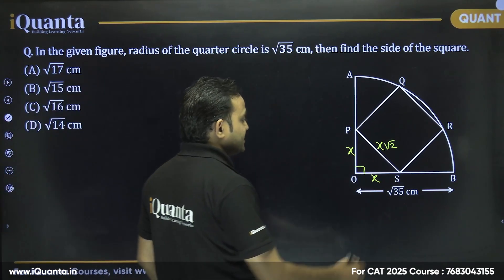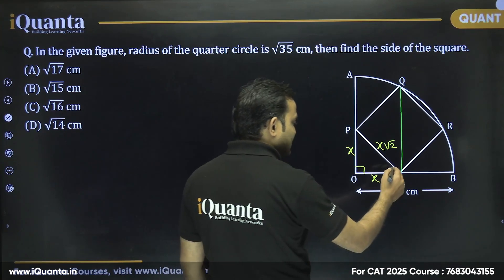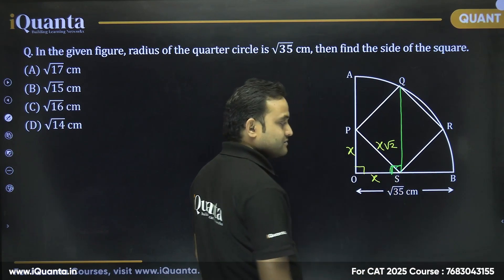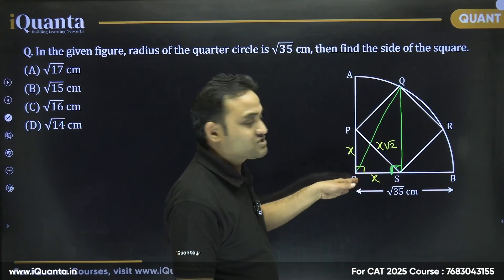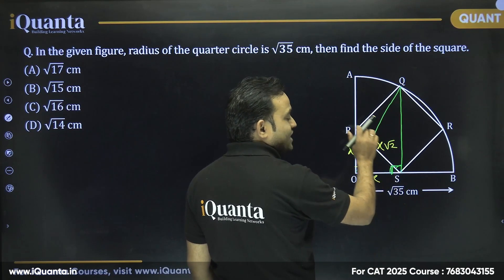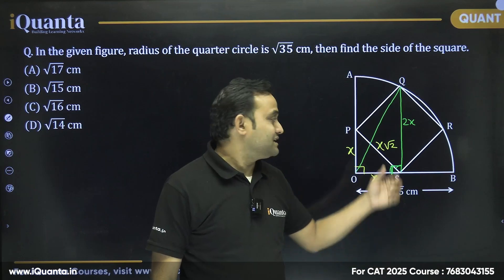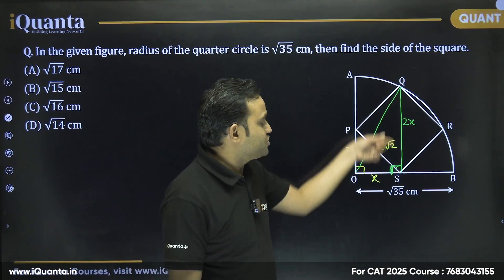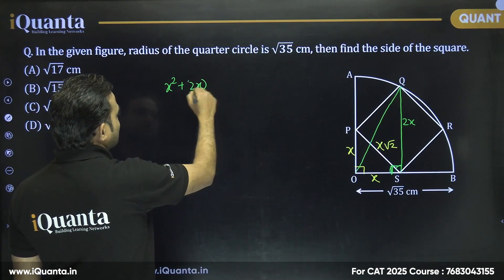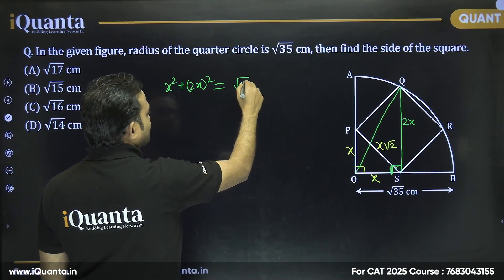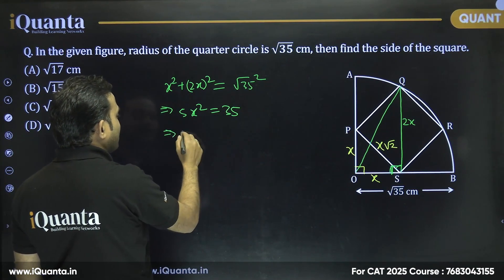If I join Q and S — the diagonal of the square — angle QSO is 45° and angle SQO is also 45°, giving a right angle at S. So QS = X√2, which is the diagonal of the square. Using the Pythagorean theorem in triangle OQS: OQ² = OS² + QS² = X² + (X√2)² = X² + 2X² = 5X².